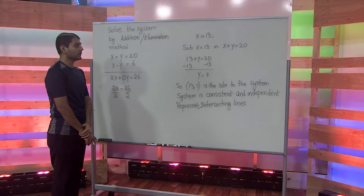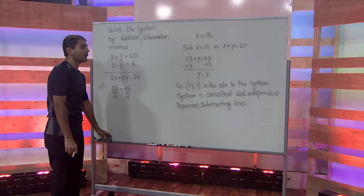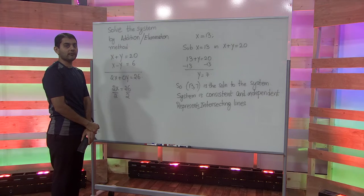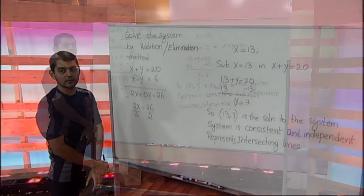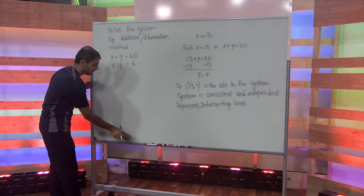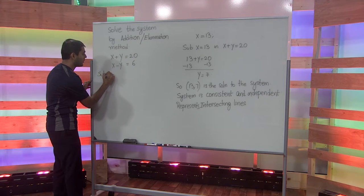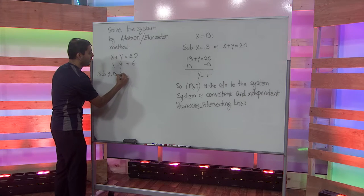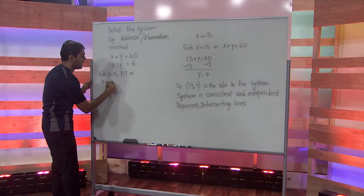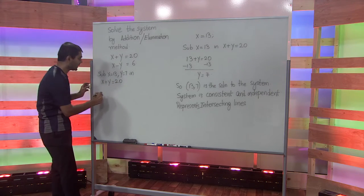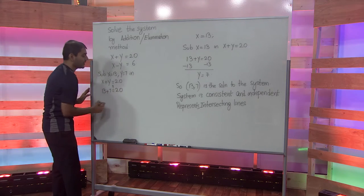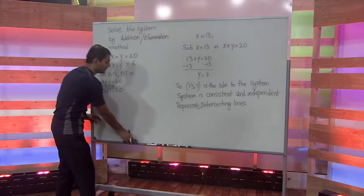To check if the solution is correct, we substitute x equals 13 and y equals 7 into both equations to see if the system reduces to an identity. Substituting x equals 13 and y equals 7 into the first equation x plus y equals 20, the equation reduces to an identity.